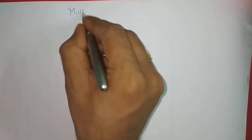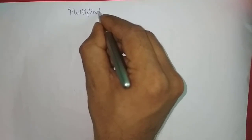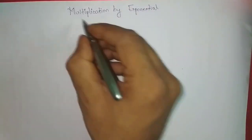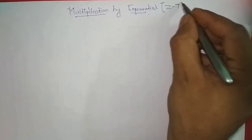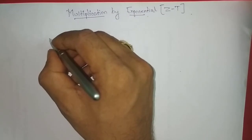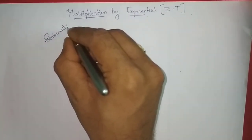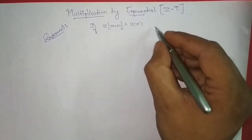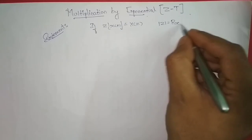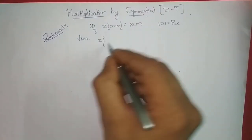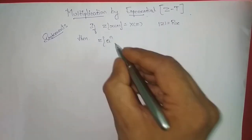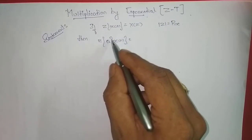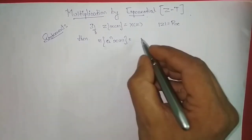Next, we will try to prove multiplication by exponential of the Z-transform. Statement: if the Z-transform of x[n] is equal to X(Z) with ROC |Z| = Rx, then the Z-transform of an exponential signal in discrete time — given by a^n times x[n] — is called multiplication by exponential, since we are multiplying an exponential signal a^n to a discrete-time signal x[n].